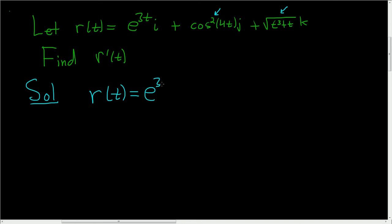So this is e to the 3ti plus, it will help to think of this as cosine to the 4ti quantity squared, because we have to use the chain rule when we take this derivative.